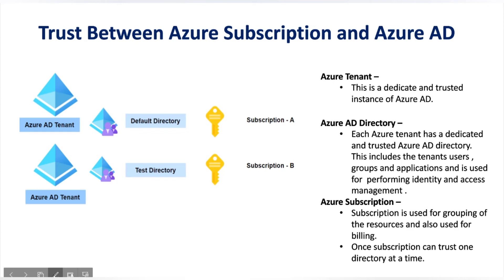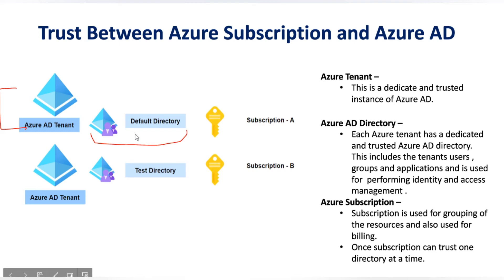An Azure subscription is used for grouping resources and also for billing, and one subscription can trust only one directory at a time. For example, under an Azure tenant we have a default Azure Active Directory called Default Directory, and this directory is mapped with subscription A. At the same time, this default directory cannot also be mapped with another subscription — a single directory can only trust one subscription at a time.